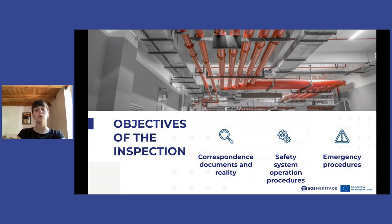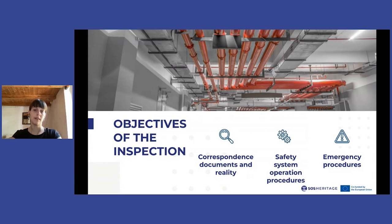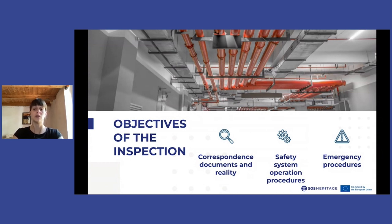It is also useful to identify the actual operation procedures of the safety systems indicated in the plan, including the correct general operation, frequent maintenance of the systems, and the conditions that can compromise the correct use of emergency devices. For example, extinguishers, despite being properly maintained, may be positioned in such a way as to make them practically impossible to reach in an emergency. Or security cameras whose views, even if fully functional, may be covered by boxes or artworks that create hidden corners.